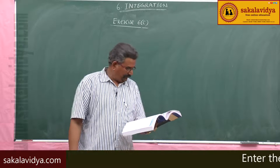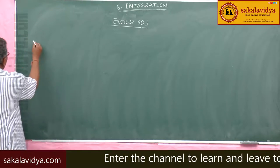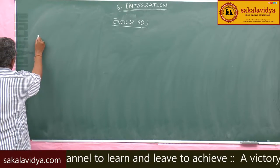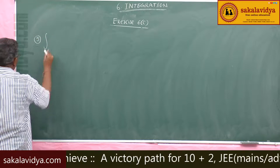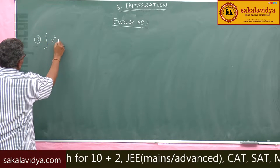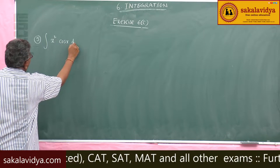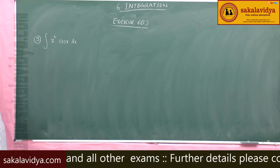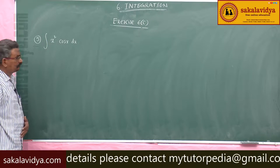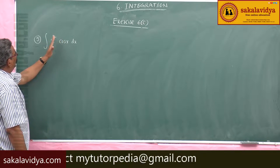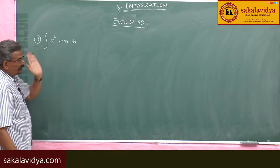5th problem: Evaluate the integral of x² cos(x) dx. We use the LIATE rule, where algebra comes before trigonometric functions. So the order is algebraic first, then trigonometric.